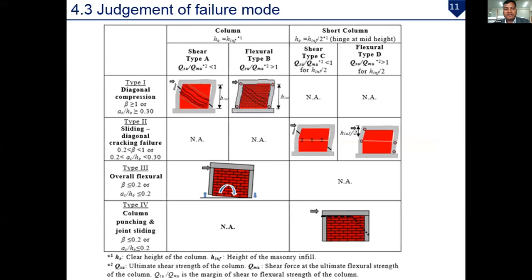This matrix shows the relationship between different types of failure modes depending on the beta index and the contact length ratio, covering different column failure types such as shear type and flexure type.